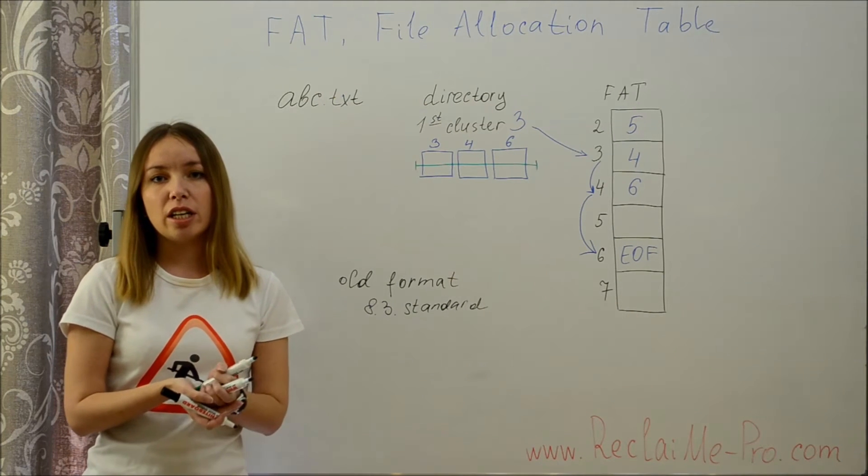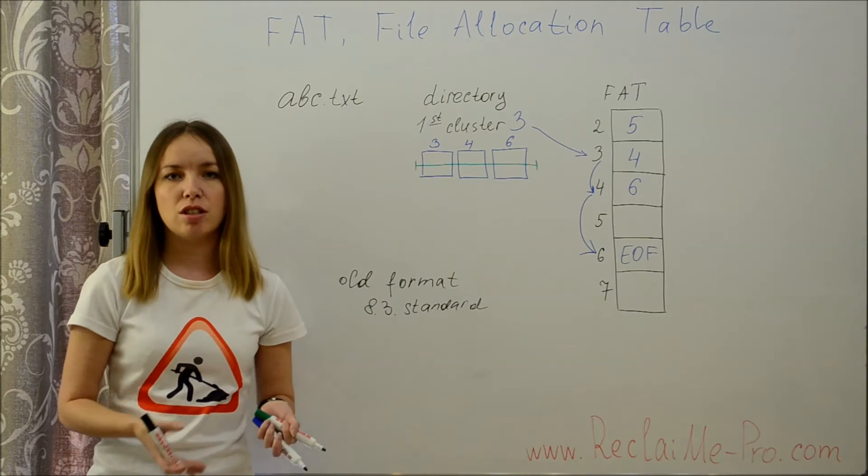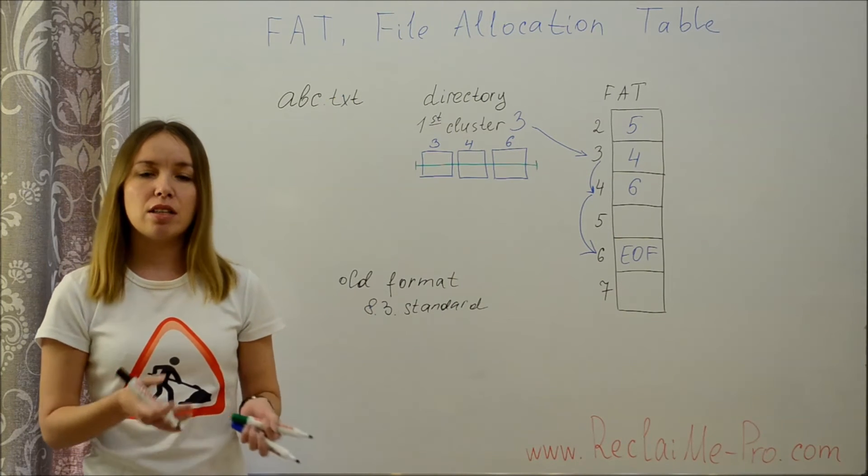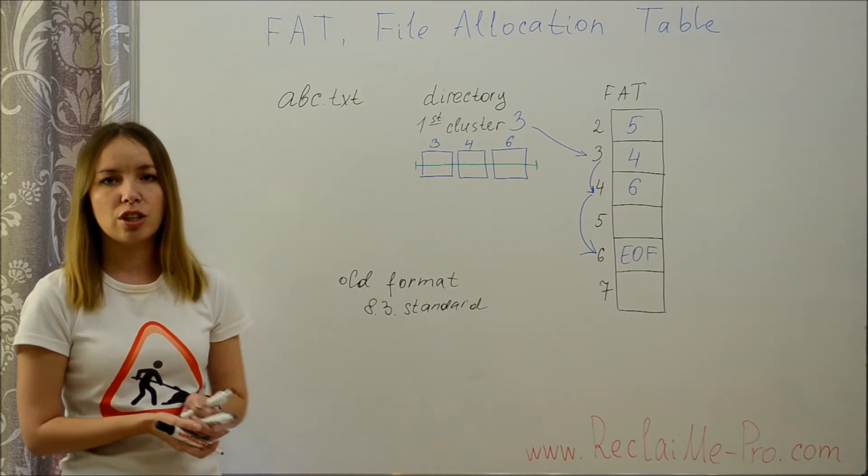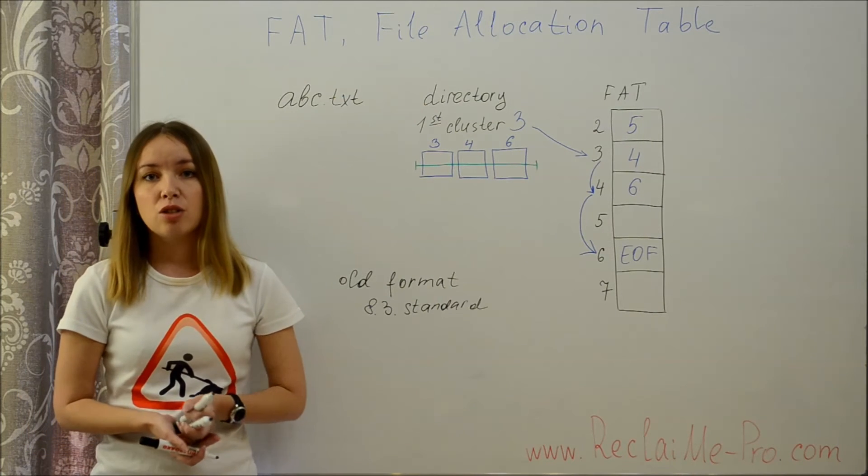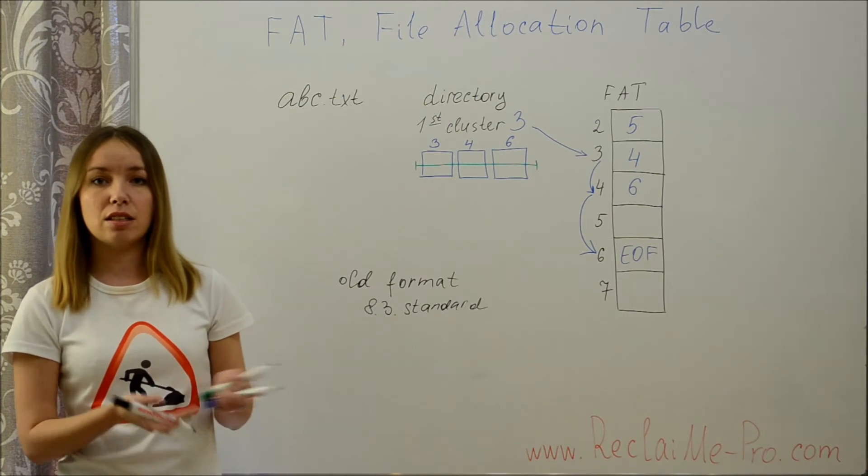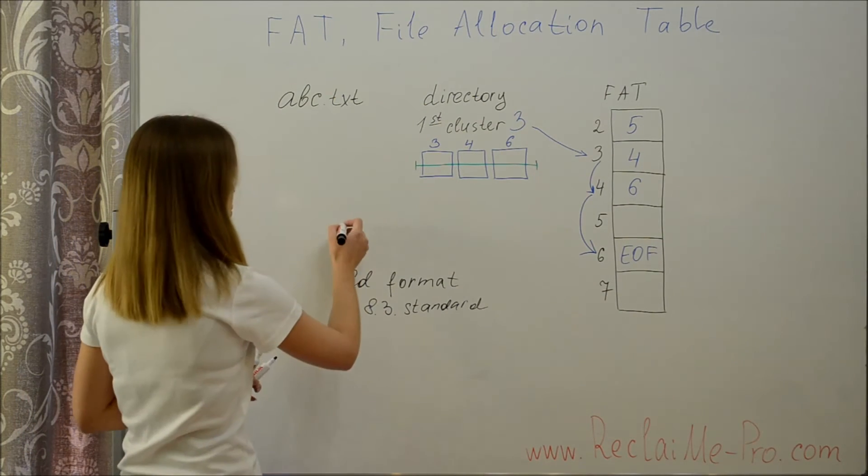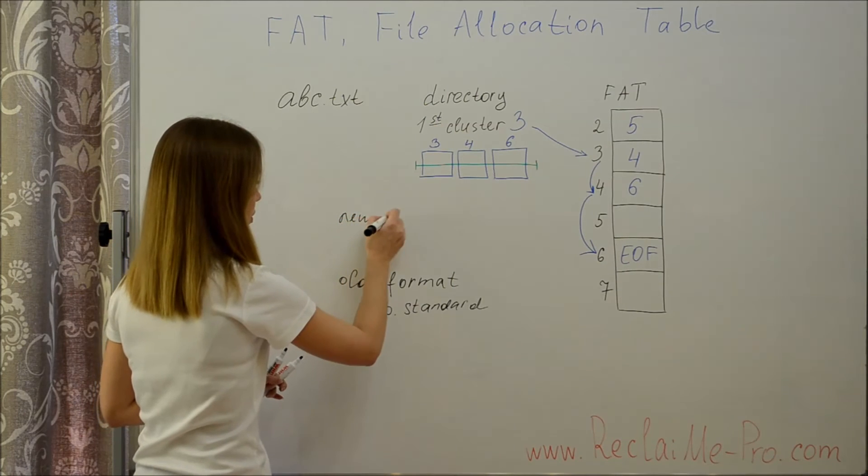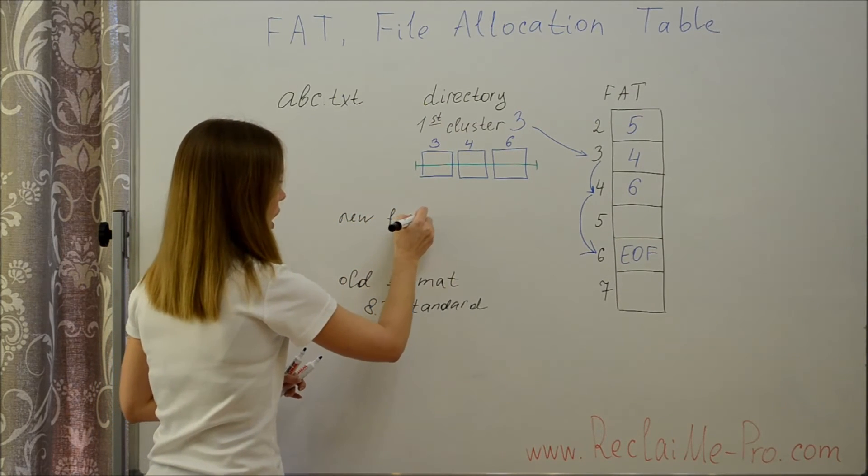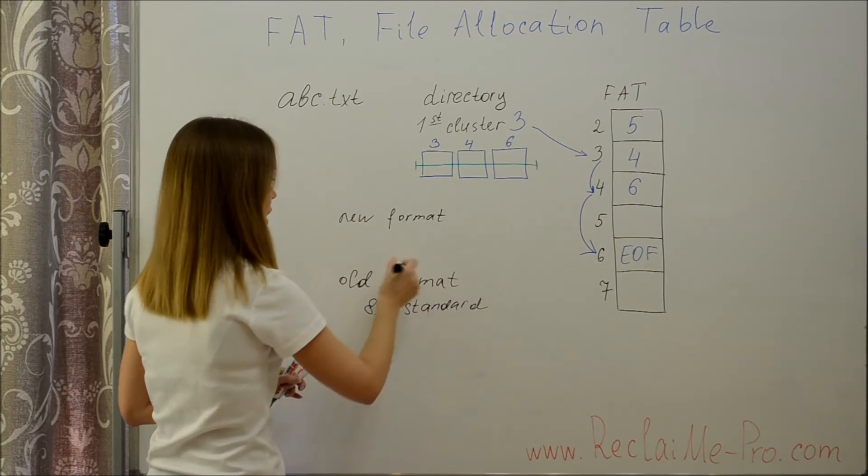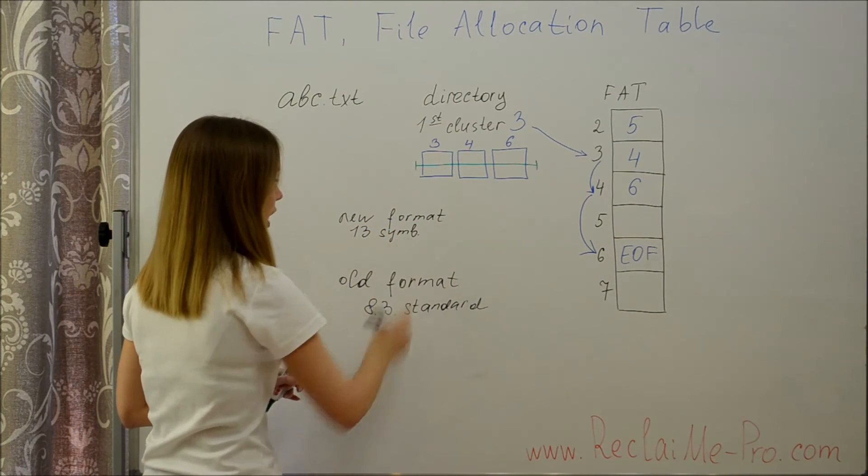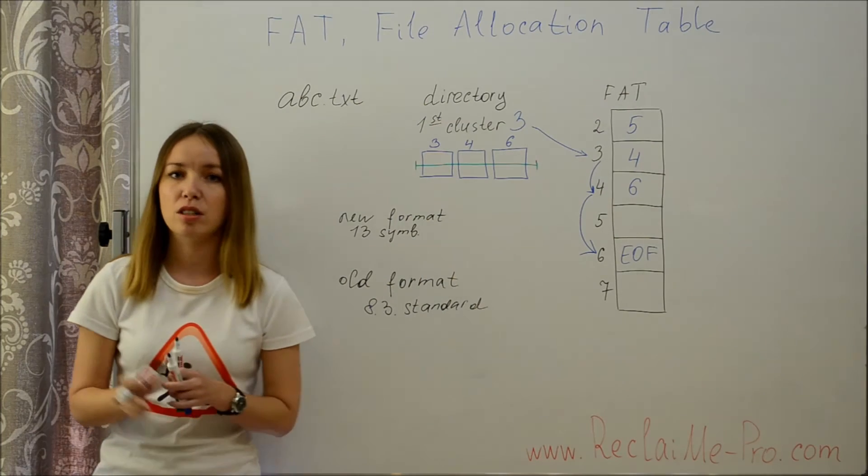Additionally, a directory entry contains file size, the number of the first cluster, the date and time of file creation and attributes. To write file names longer than 8 symbols, another format allowing 13 symbols per element was developed.